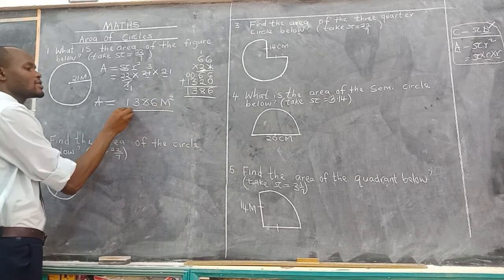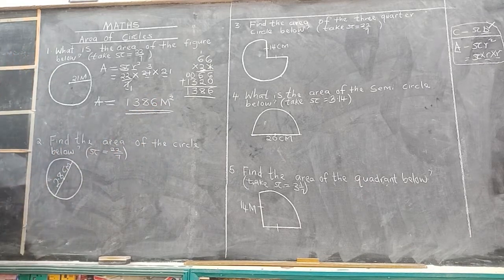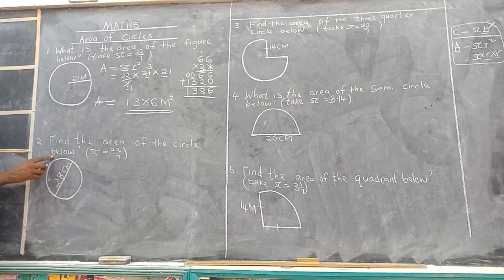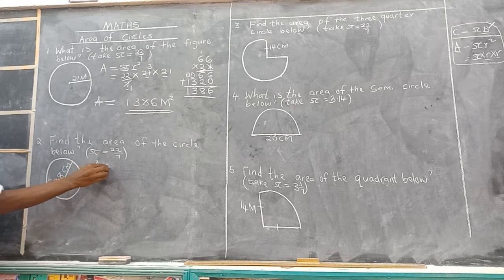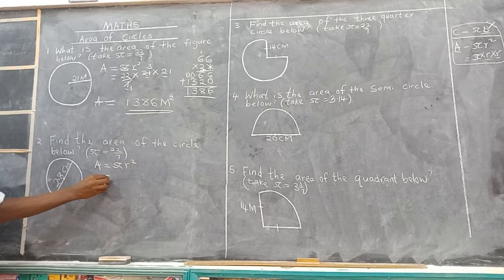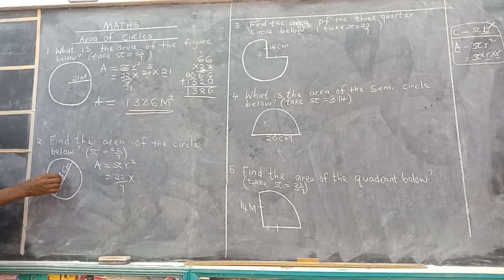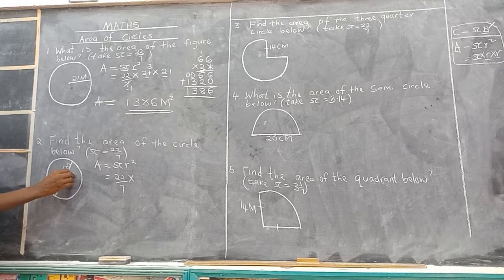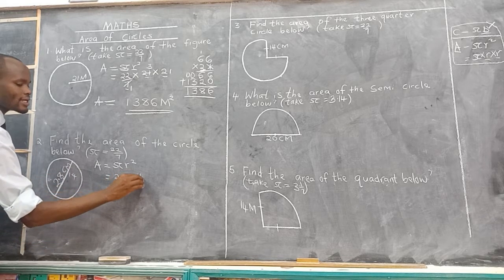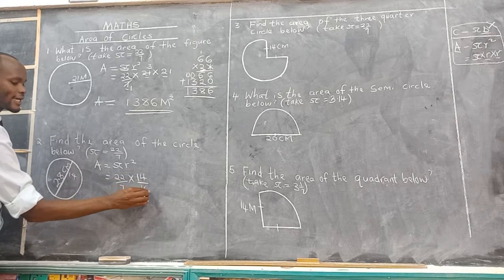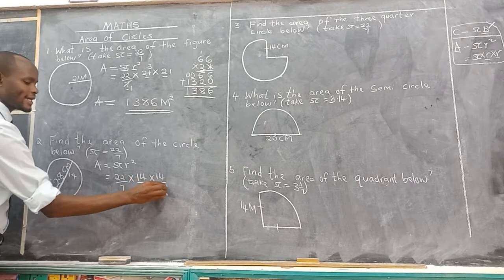Remember, now we are talking about area, so it is meters squared. Example number 2: find the area of the circle. Remember this one has a decimal point. Area of a circle is pi r squared. Pi is 22 over 7. The radius will be half of the diameter, and half of 2.8 is 1.4. So you write the radius as 14 over 10, times 14 over 10.